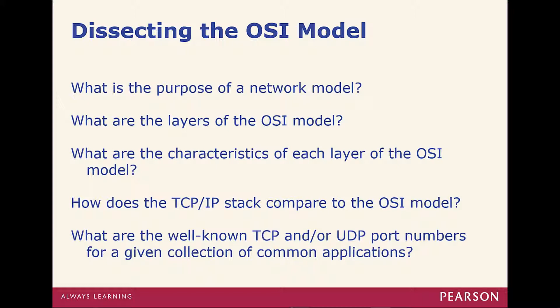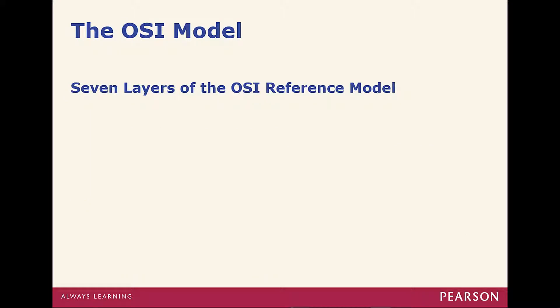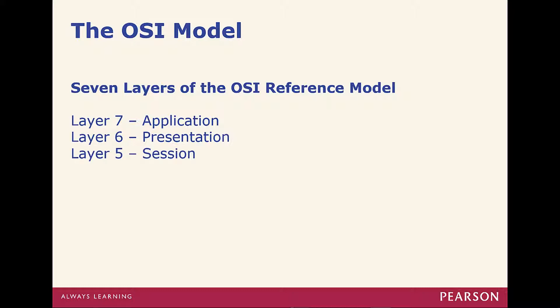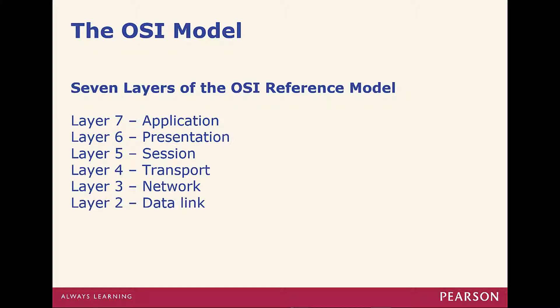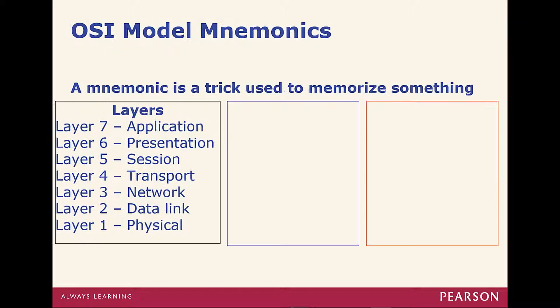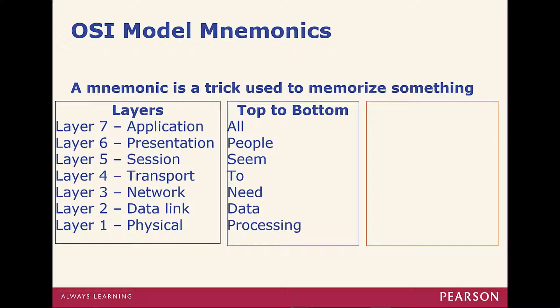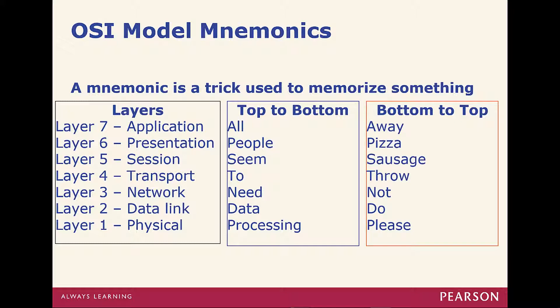The purpose of a network model is so that we have a structure. The seven layers are: Layer 7 Application, Layer 6 Presentation, Layer 5 Session, Layer 4 Transport, Layer 3 Network, Layer 2 Data Link, and Layer 1 Physical. Ways to remember this — top to bottom: 'All People Seem To Need Data Processing.' Bottom to top: 'Please Do Not Throw Sausage Pizza Away.'